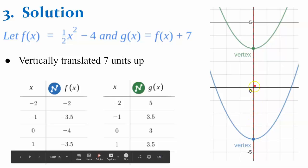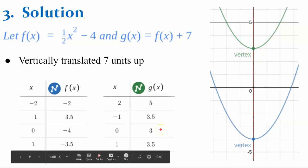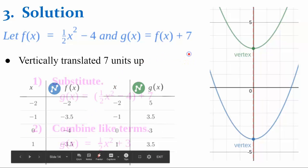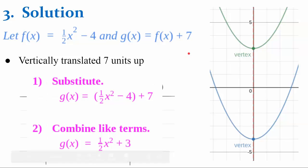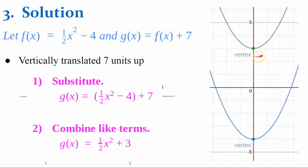Now g is translating up 7 units, so the vertex of function g is at (0, 3), which is also the y-intercept, compared to (0, negative 4) for function f. To write g in terms of x, I substitute the expression for f of x — negative one-half x squared minus 4 — and add 7. Combining like terms, negative 4 plus 7 is 3, giving us g of x equals one-half x squared plus 3. Notice that this 3 is also the y-intercept.